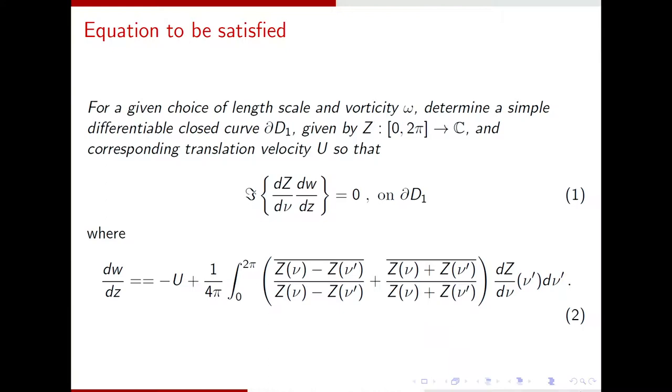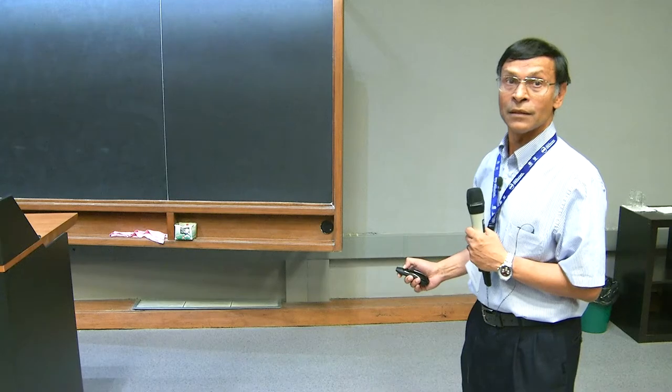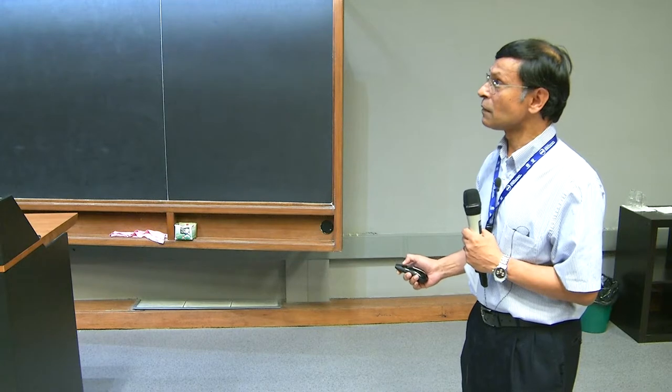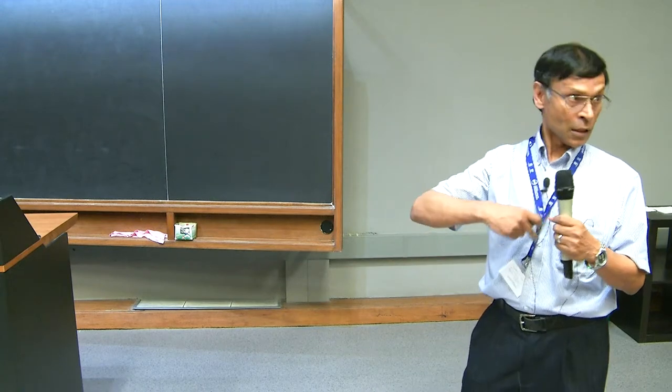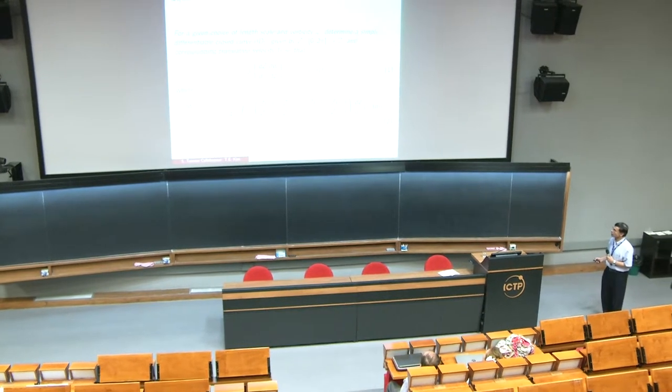The velocity is given by this expression that's quite easily derived. And this expression is valid on the boundary. And this is the effect of the other vortex, located at the image location in the lower half vortex. And you have a uniform stream, which is right there.